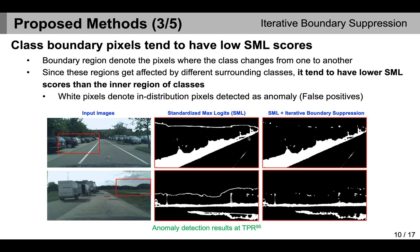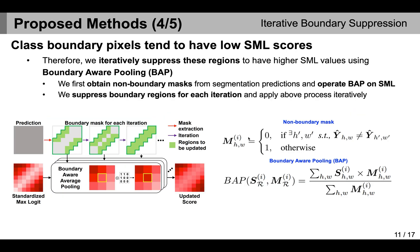Then, we perform the iterative boundary suppression. We found that the boundary regions have lower SML since the boundary regions are where the classes change from one to another. In the second column of the image, the white pixels indicate the predicted anomalies. We can observe that the boundary regions are still identified as anomalies. Therefore, we iteratively suppress these regions in order to increase the SML values by using the so-called boundary-aware pooling, BAP in short. We first obtain the non-boundary masks from the segmentation predictions. Then, we average-pool the SML values by applying the non-boundary masks. We repeat this process iteratively and update the SML values.